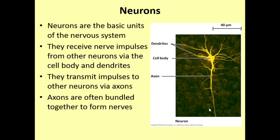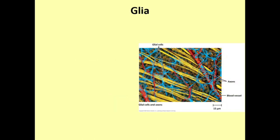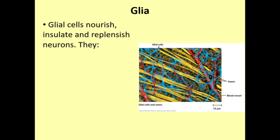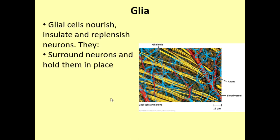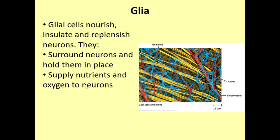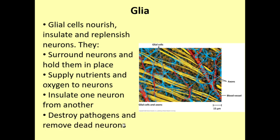Neurons also have a supporting cast of glial cells — or glia — including Schwann cells, oligodendrocytes, and astrocytes. These help nourish, insulate, and replenish neurons: they supply vital nutrients and oxygen, insulate one neuron from another to prevent interference between the electrical action potentials, destroy pathogens, and break down and remove dead neurons. Glial cells play a vital role in supporting the nerve cells themselves and keeping the whole system running healthily.